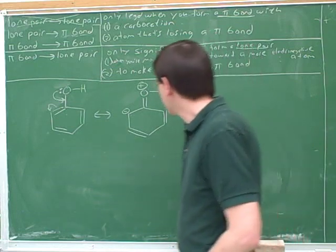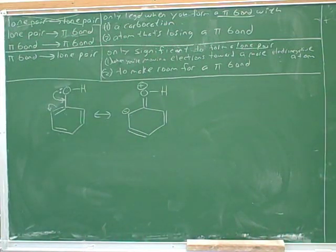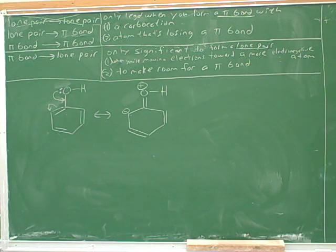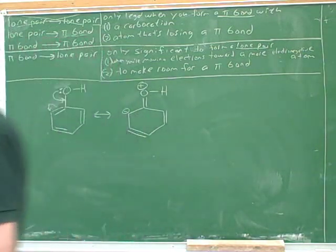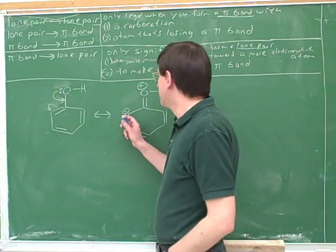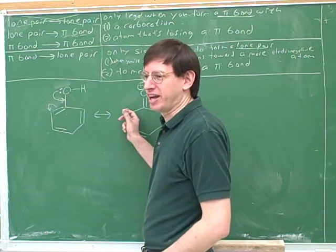Now let's try to draw another resonance structure based on this picture. Let's try to put in one or two electron-pushing arrows that would allow us to get another legal and significant resonance structure. It's pretty clear that we're going to be moving these electrons — these are the unhappy electrons. We want to spread out this charge.